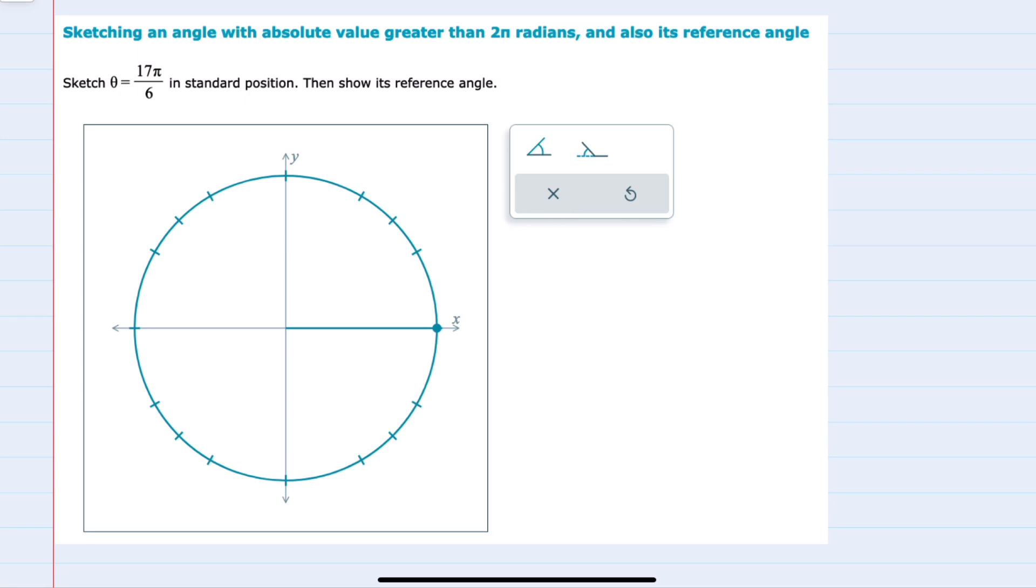In standard position we have 0 radians here on the positive x-axis and then 1 revolution around the unit circle takes us back to that same location but now that is 2π radians. This measure 17π/6 is further than that so to graph it we'll just need to figure out how much further.